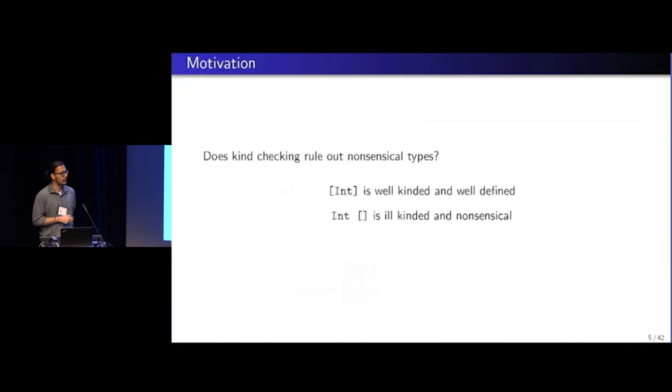So this seems to be working well in practice, or has been for the last 30 years or so, where types like int list are well-kinded and well-defined. But int applied to list is ill-kinded and hence nonsensical. So it seems like a good, very good approximation.